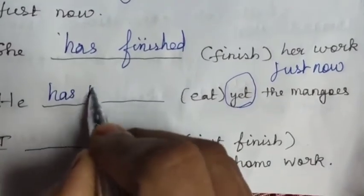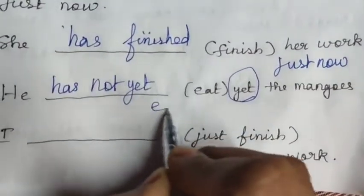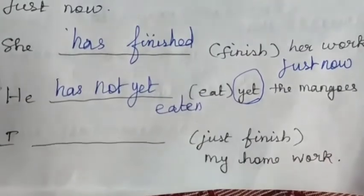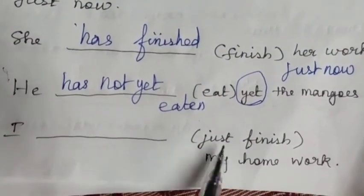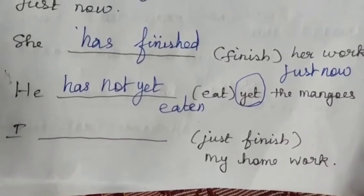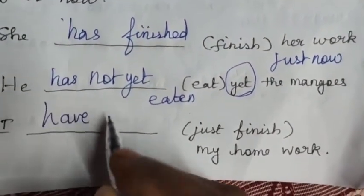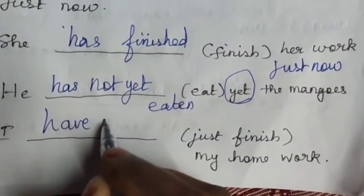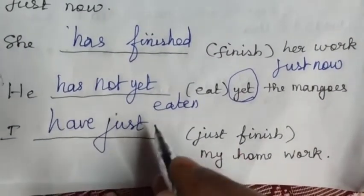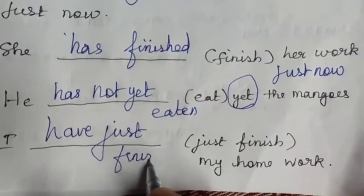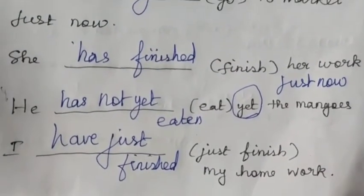Next: 'He has not yet eaten the mangoes.' 'Yet' makes the sentence negative: 'has not yet eaten'. Then: 'I dash just do my homework.' 'Just' is a clue word of present perfect tense. 'I have just finished my homework.' Have plus verb 3: finished.